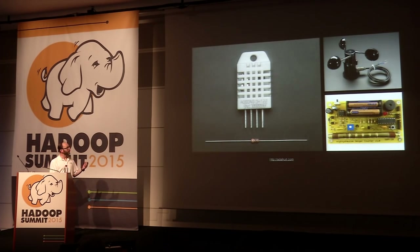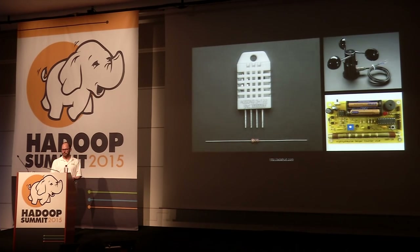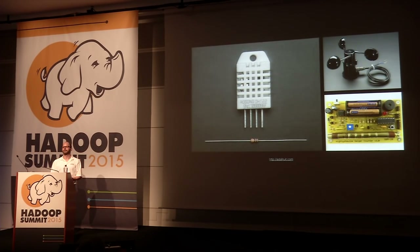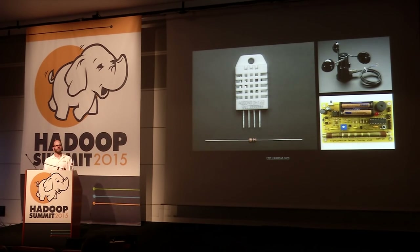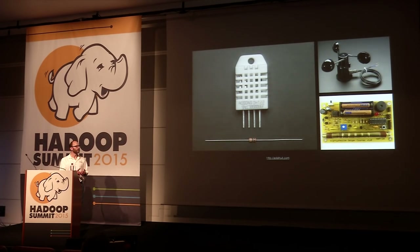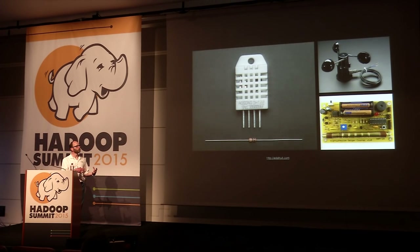Here's a temperature and humidity sensor, an anemometer that measures wind speed, and a Geiger counter. If you use your imagination, you could combine these for a use case that detects radiation leaks and, based on weather conditions, helps predict how a plume of radiation will travel.